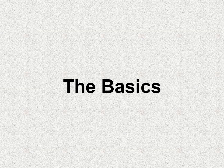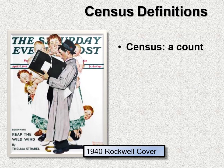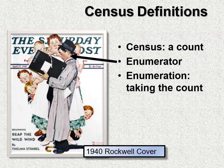The basics — let's all use common vocabulary. A census is a count. I'm a bird watcher; I count birds at the Christmas bird count, except this time we're counting humans. The person doing the count is the enumerator. The enumeration is taking the count. But what's most important to us are the schedules — the questions asked of people, their responses written down. That's what we want to see.